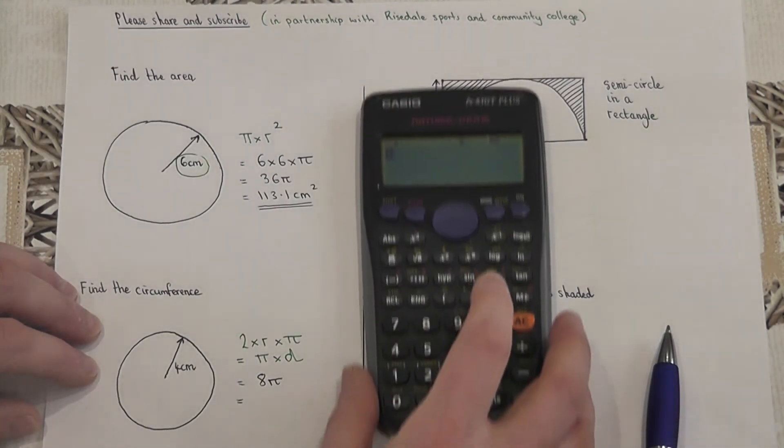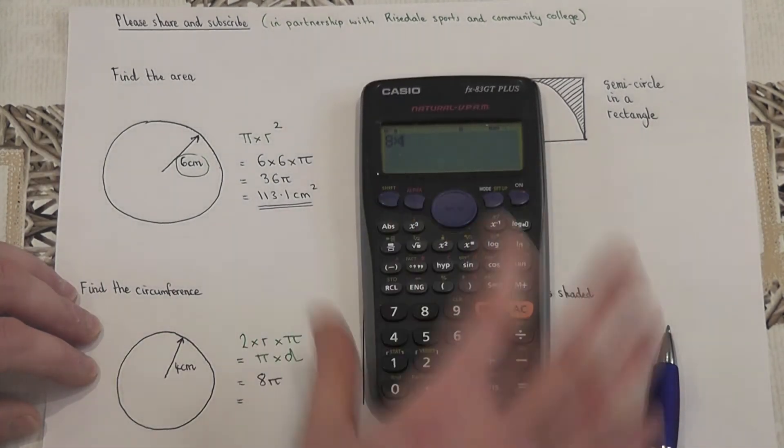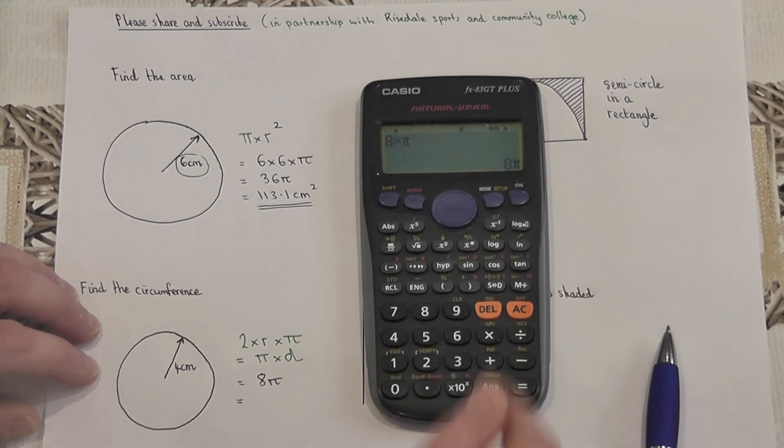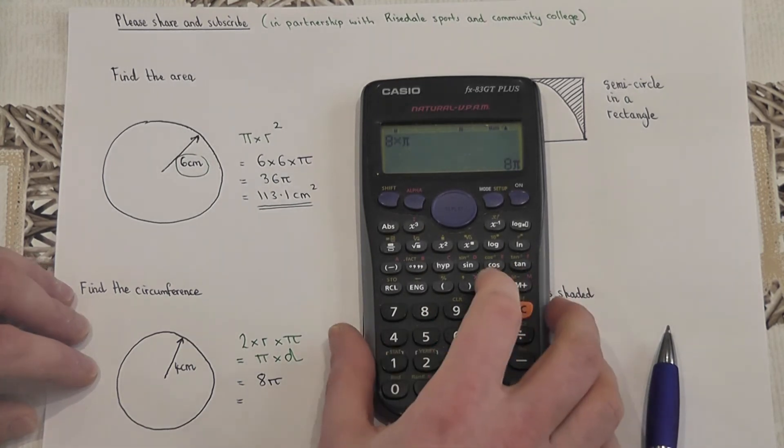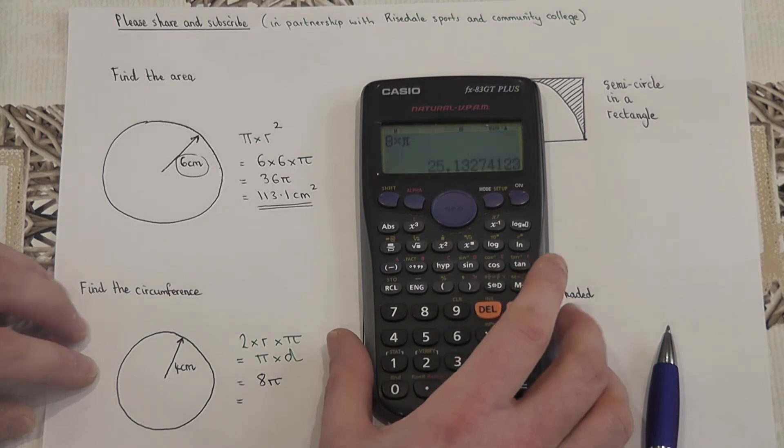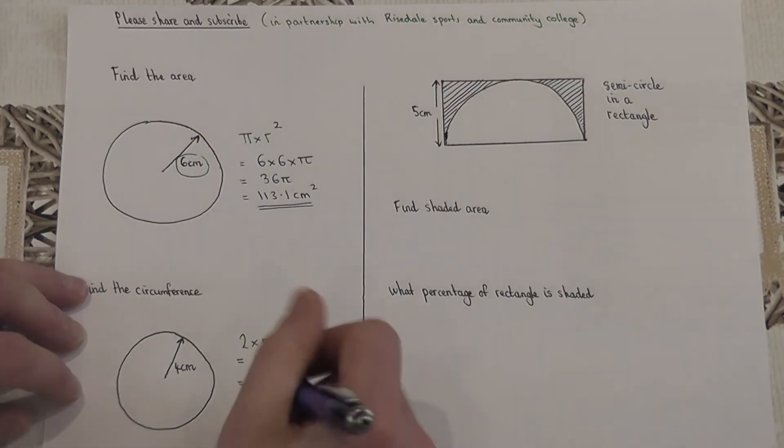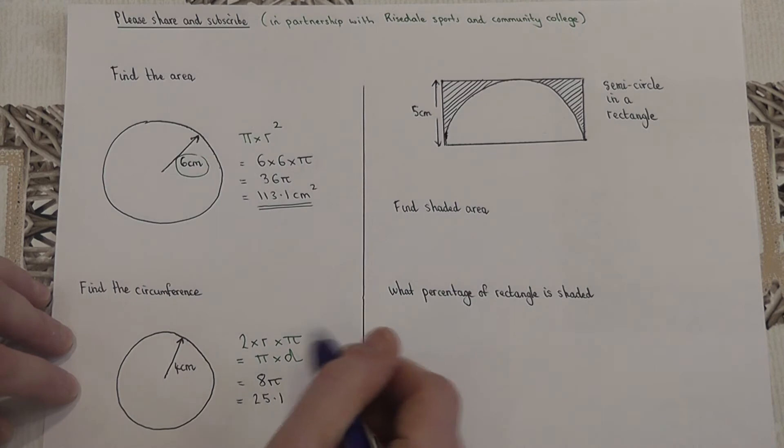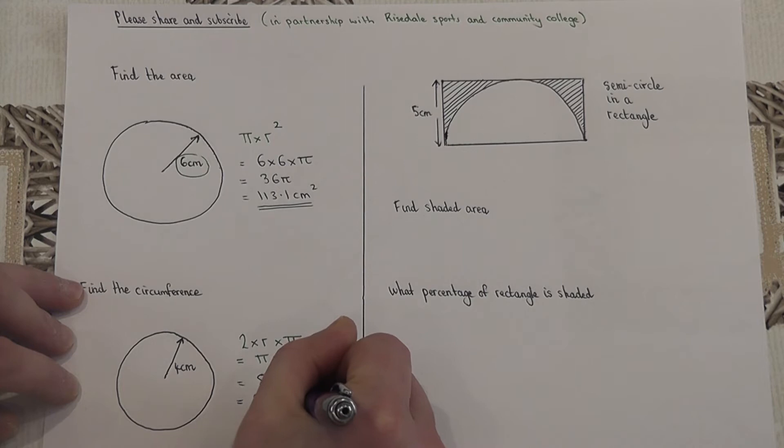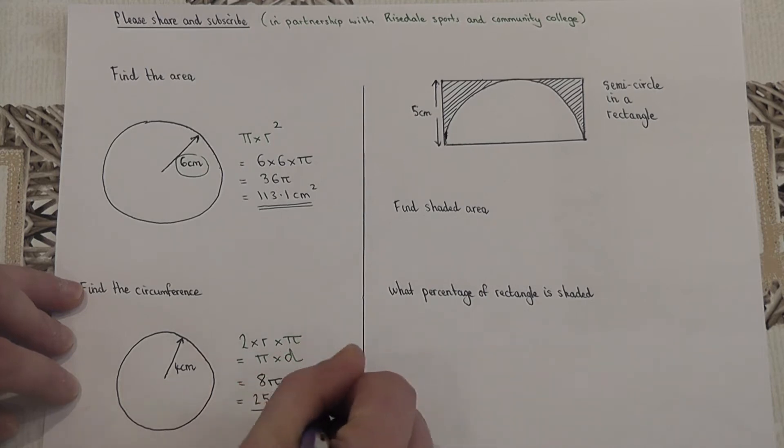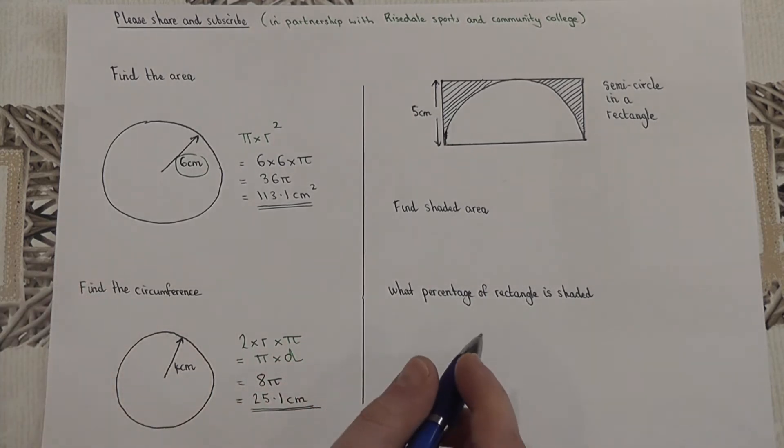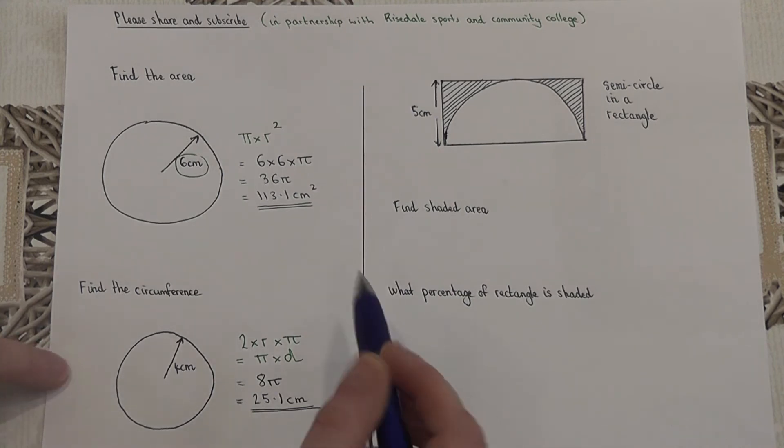So 8 times by pi equals 8π in terms of pi. I can convert that to a decimal, and that's 25.1 to one decimal place. Now the circumference is a distance around the circle, so therefore the units would just be centimeters. So these are the two essential formulas to know for the area and circumference of a circle.